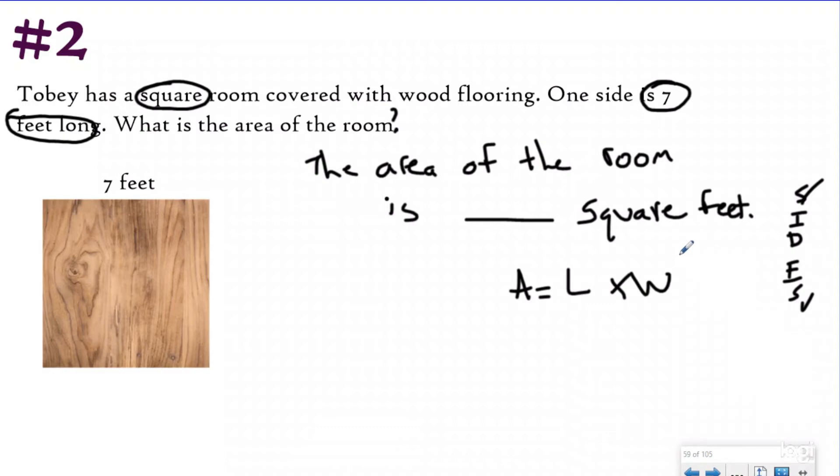Well, because we've identified this as a square, we know that our length is going to be seven and our width is also going to be seven. So when we plug those into our formula, if we were covering this with square feet, we would have seven groups of seven, which would make our area 49 square feet.